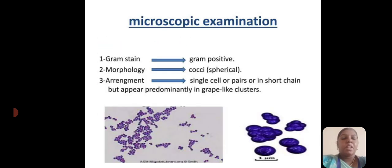Microscopic examination — Gram staining: Gram-positive. Morphology: Cocci. Arrangement: single cells or pairs in short chains, but appearing predominantly in grape-like clusters.